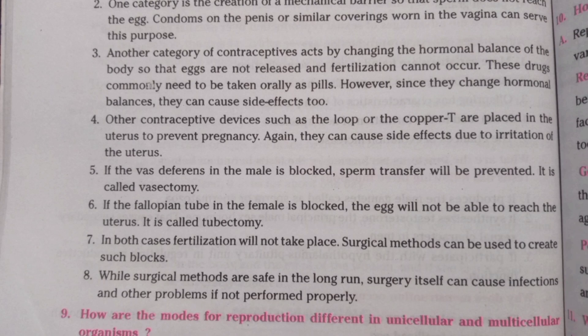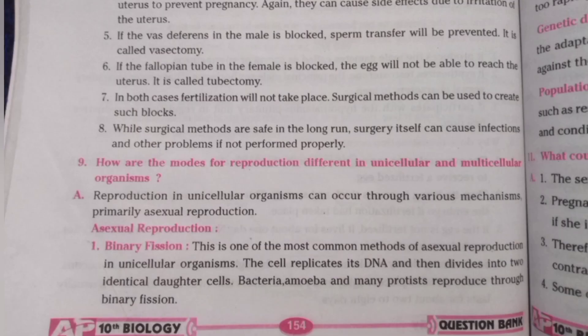How are the modes of reproduction different in unicellular and multicellular organisms? Reproduction in unicellular organisms can occur through various mechanisms, primarily asexual reproduction. One method is binary fission, which is one of the most common methods of asexual reproduction. In unicellular organisms, the cell replicates its DNA and then divides into two identical daughter cells.